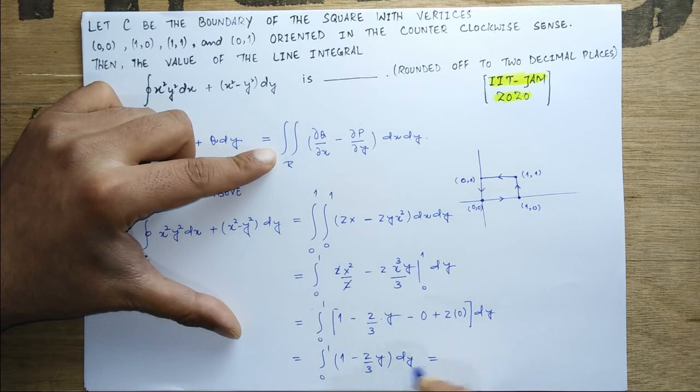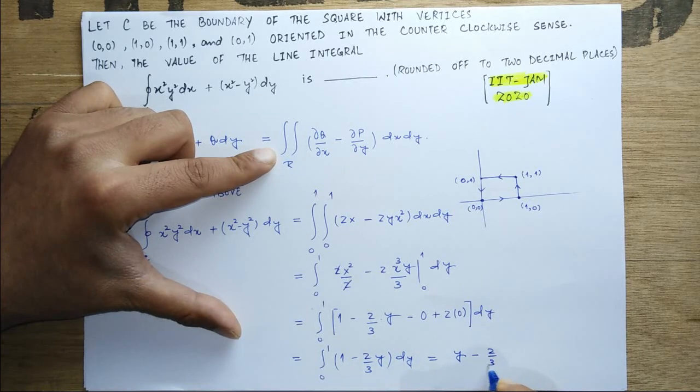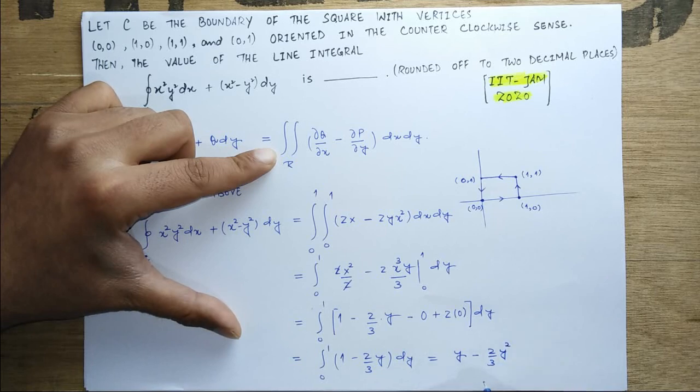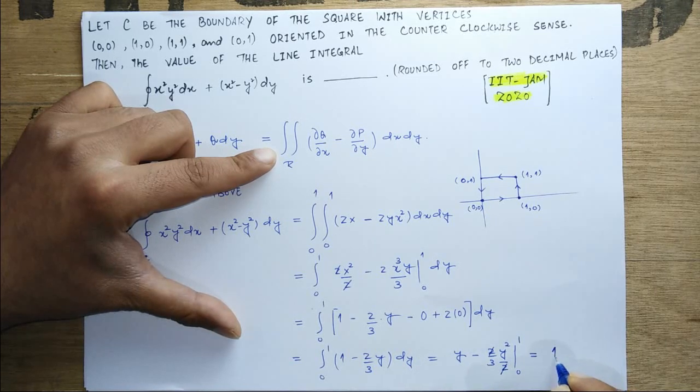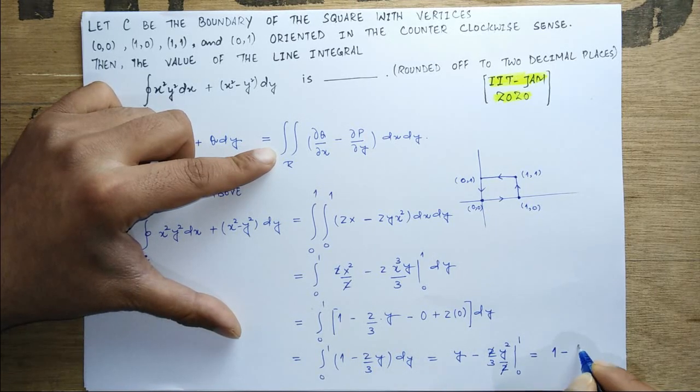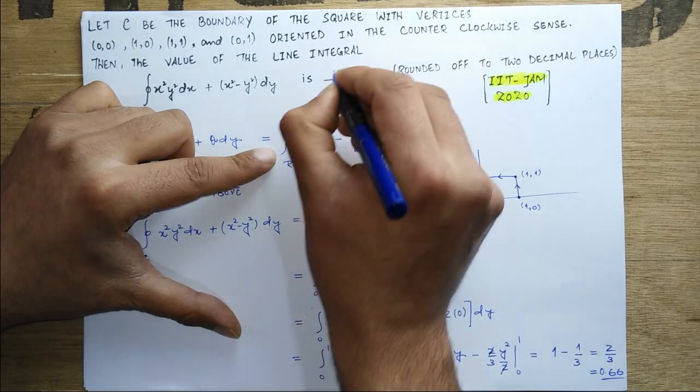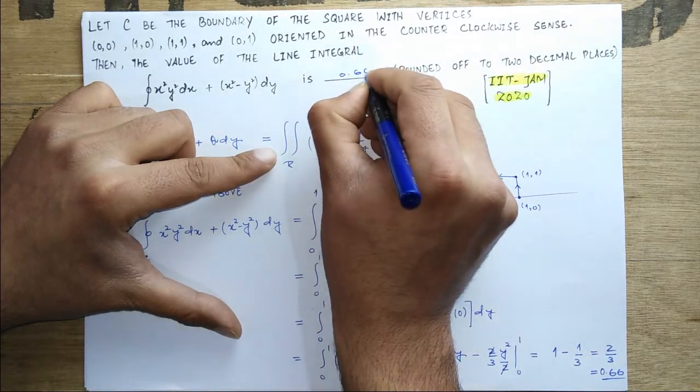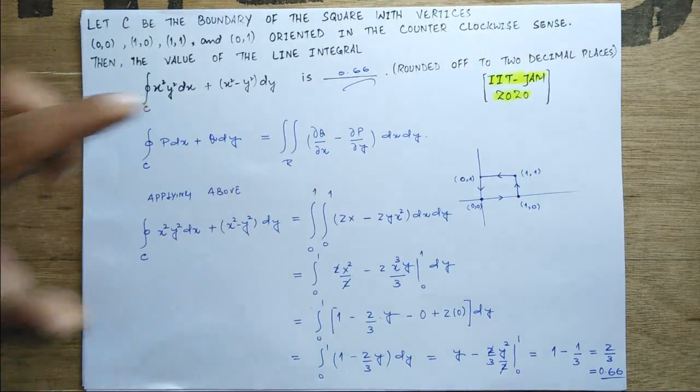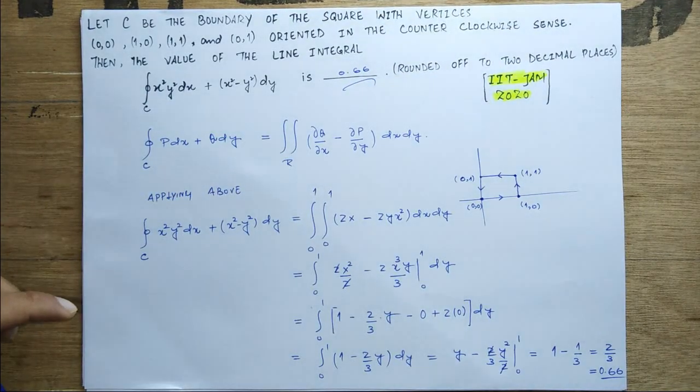Which is equal to, integrating you will get y minus 2/3 times y²/2, from 0 to 1. So this 2 and this 2 will cancel, so it will be 1 minus 1/3, which will come out to be 2/3, which equals 0.66. So the correct answer is 0.66.